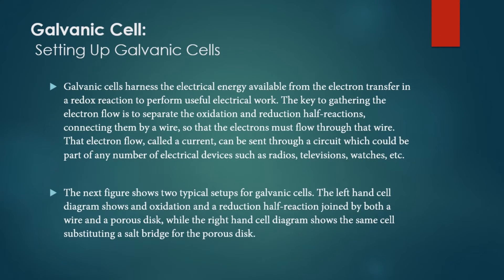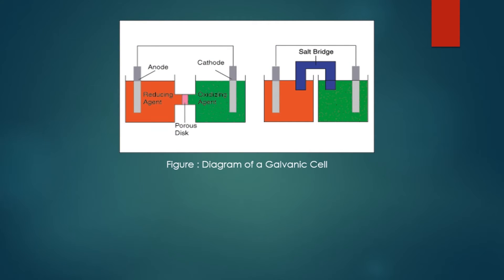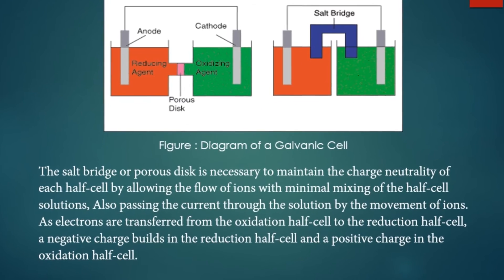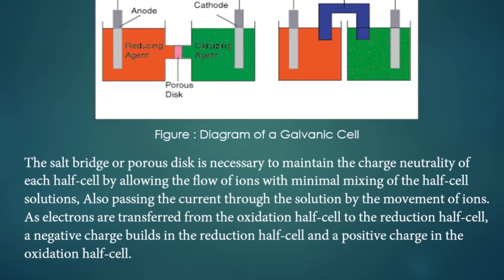This figure shows two typical setups for a galvanic cell. The left-hand cell shows oxidation and reduction half cells joined by both a wire and a porous disc, while the right-hand cell diagram shows the same cell substituting a salt bridge for the porous disc. The salt bridge or porous disc is necessary to maintain the charge neutrality of each half cell, by allowing the flow of ions with minimal mixing of the half cell solutions, also passing the current through this solution by the movement of ions.